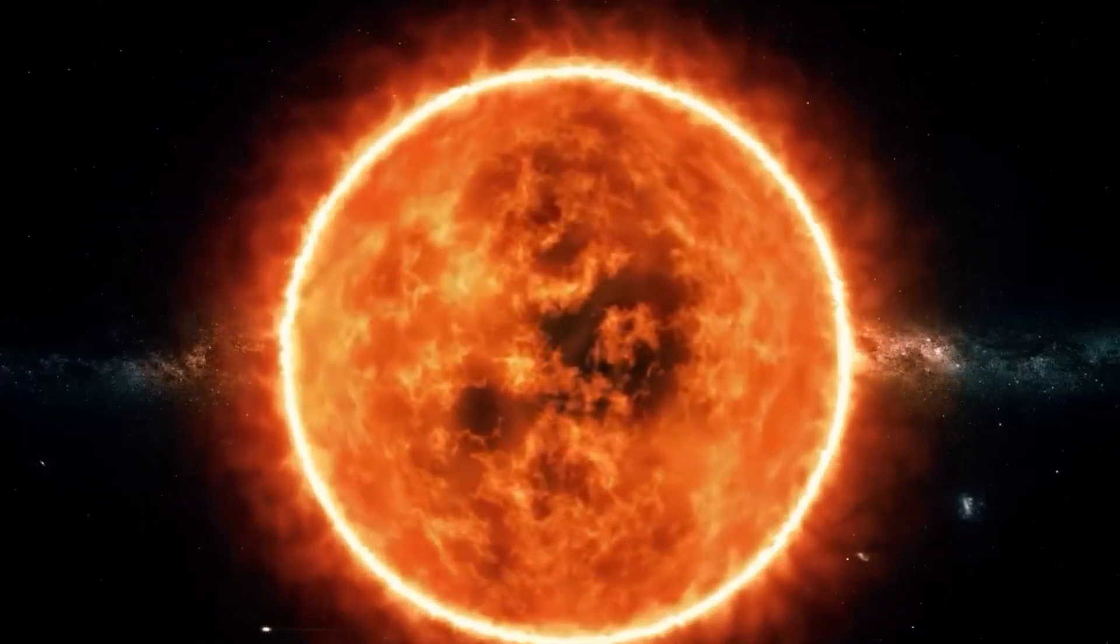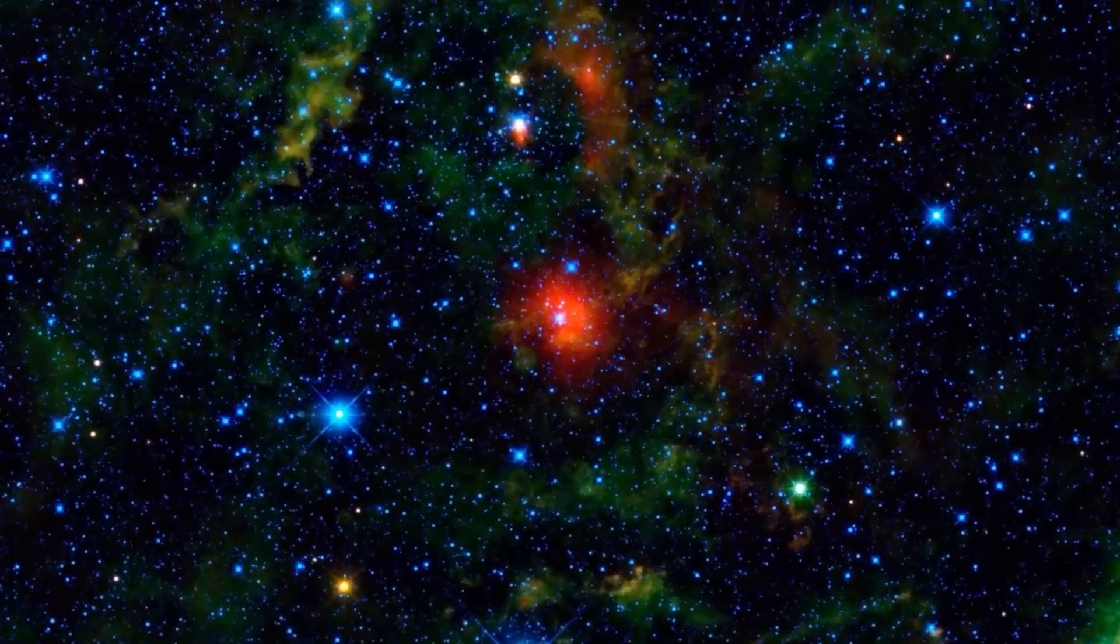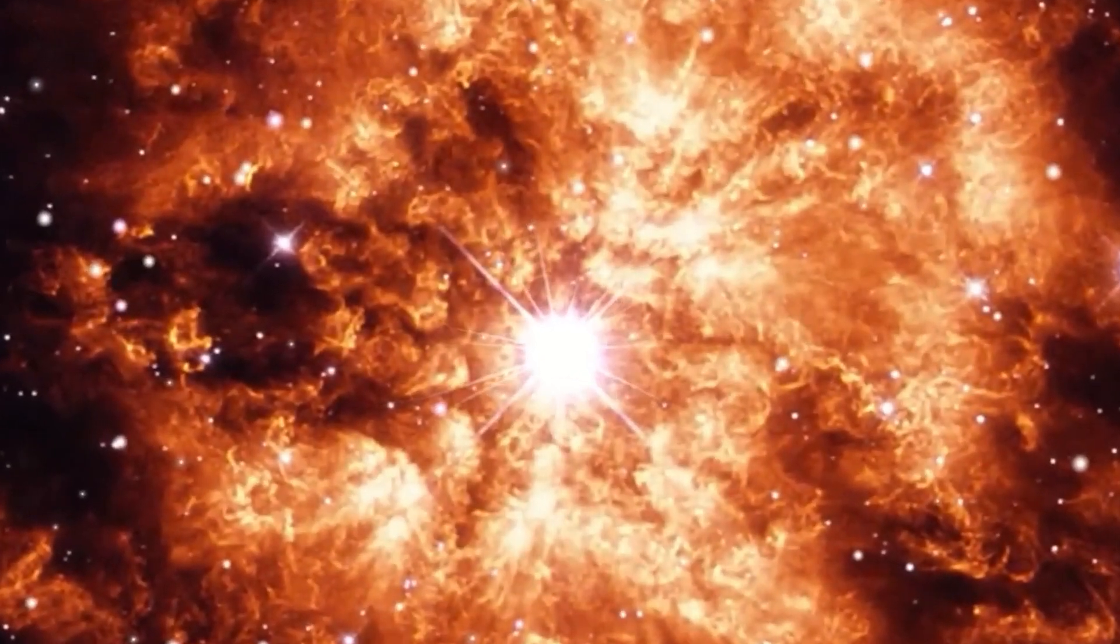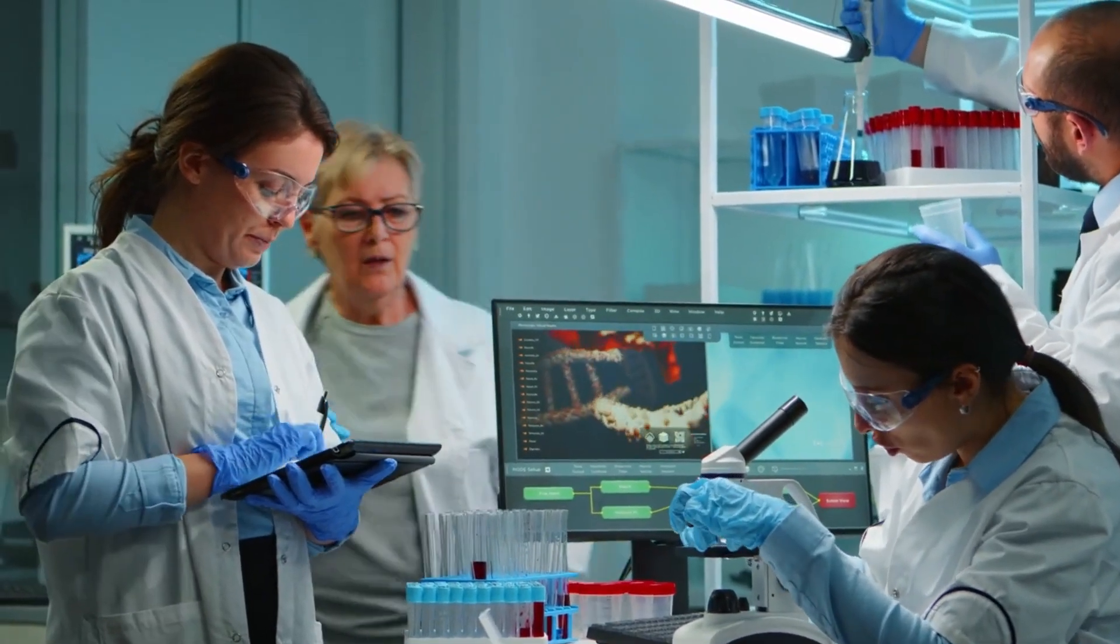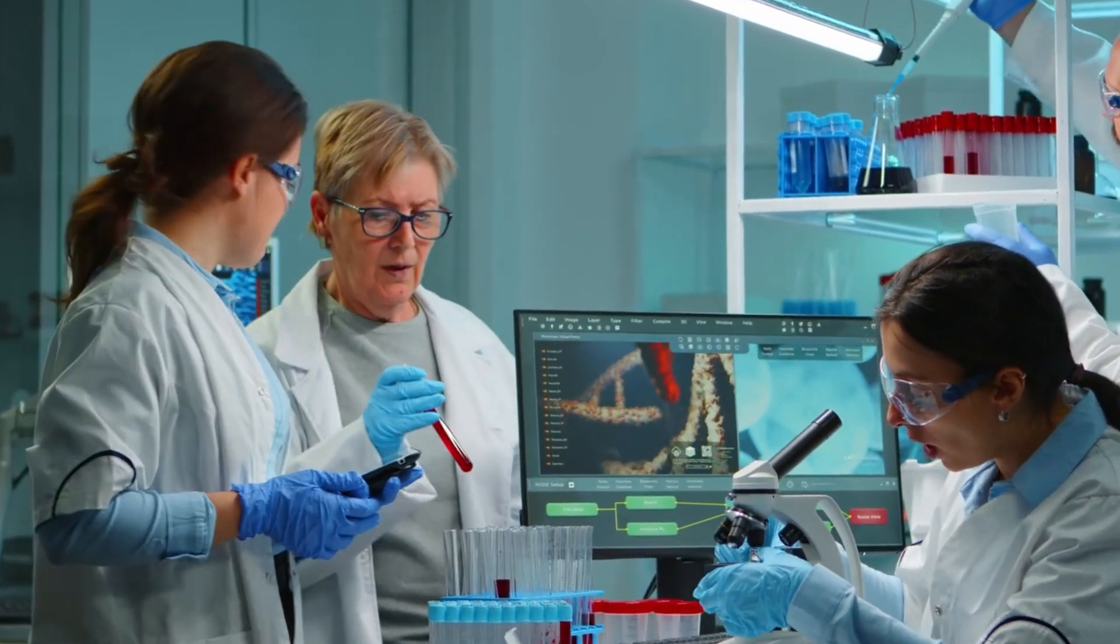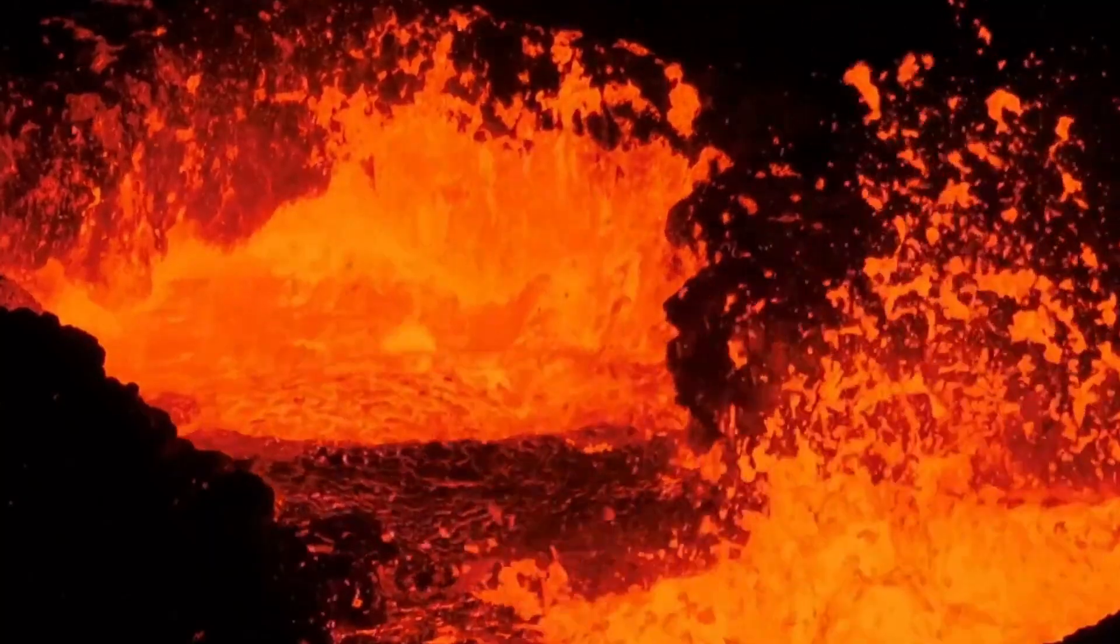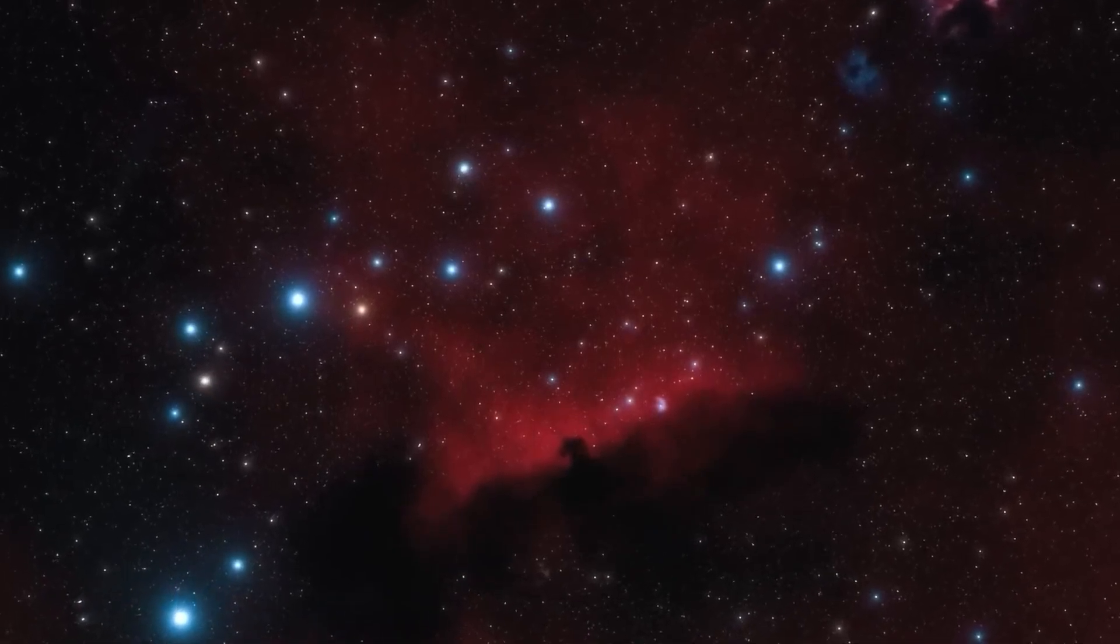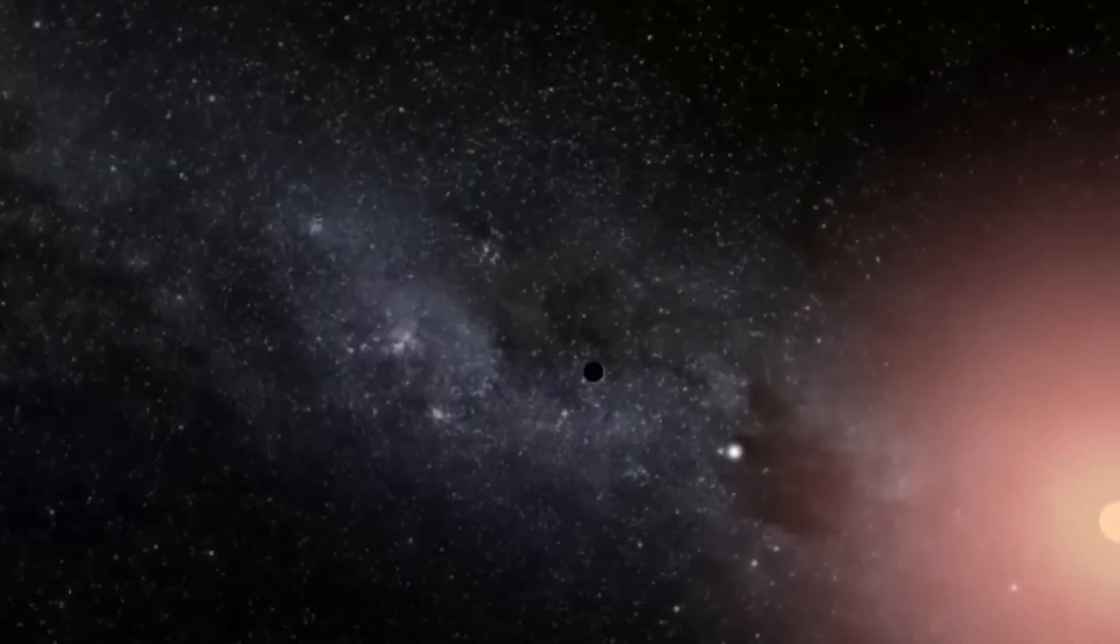Betelgeuse, also known as Alpha Orionis, is the stunning ruby-red star that shines brilliantly on the top right shoulder of the constellation Orion the Hunter. It holds the distinction of being the second brightest star in Orion, coming after the blue supergiant Rigel. Stars designated with a classification of Alpha are typically the brightest in their constellations, although Rigel outshines Betelgeuse in Orion. However, Betelgeuse's unique name, fluctuating nature, and colossal size make it a captivating subject for stellar studies and observations.